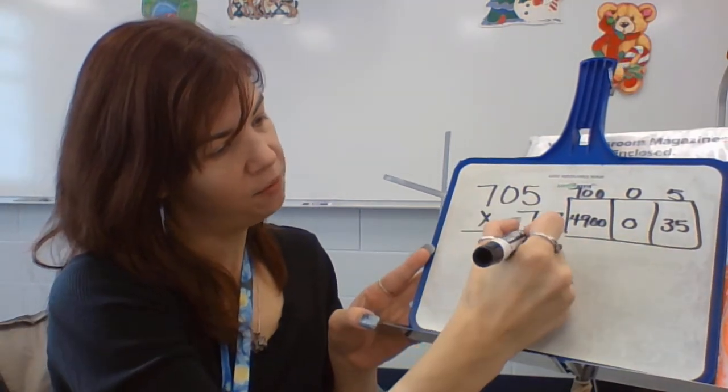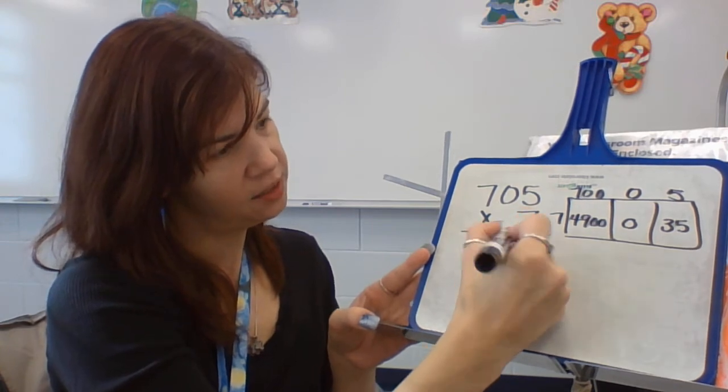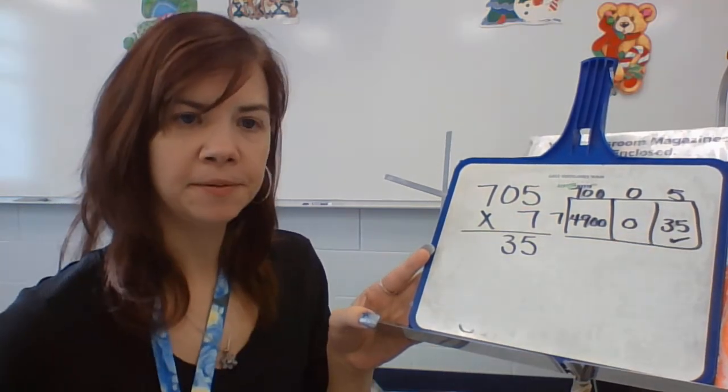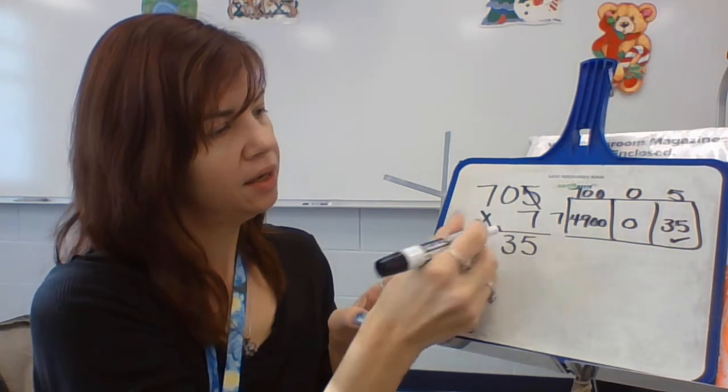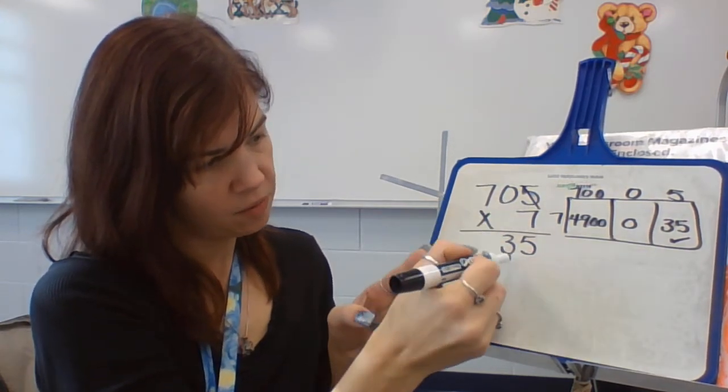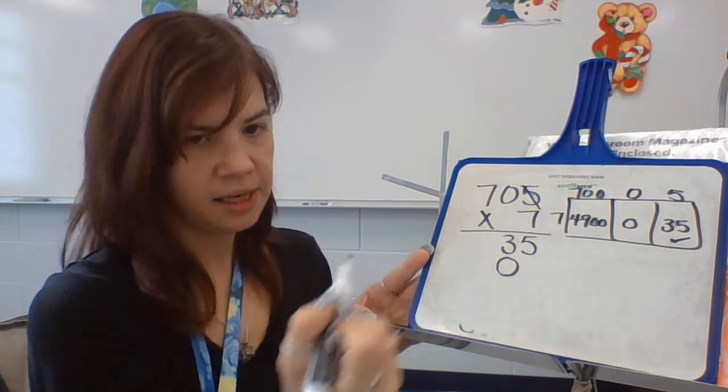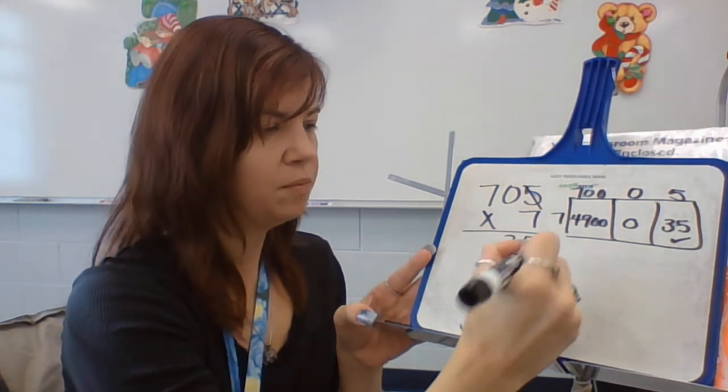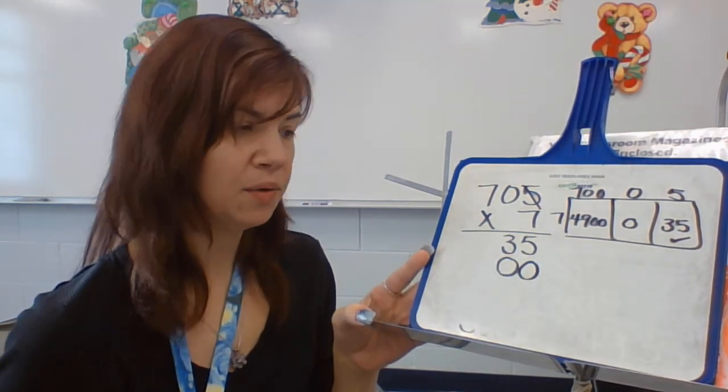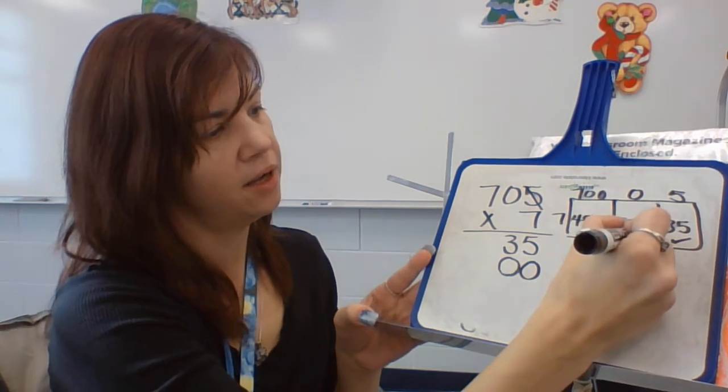All right, 5 times 7, we just said, is 35, so I know I've used that one. 7 times 0 is 0, and I make sure I put that in the tens place. And then I put a 0 into the ones. Now I've got that one.